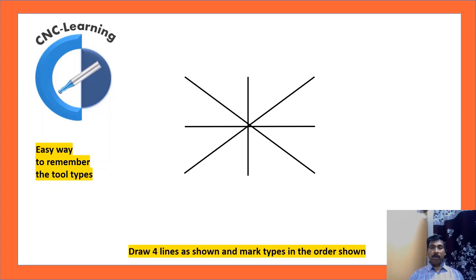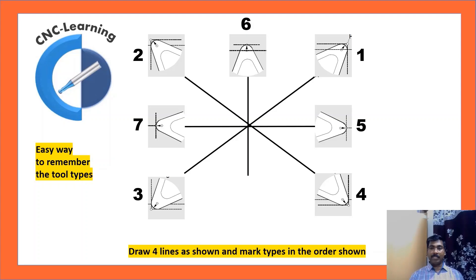Now how to remember all these tool types? Just draw four lines as shown and mark the tool types in the order shown here: 1, 2, 3, 4. So you can see it start from first quadrant, then second quadrant, third quadrant, and then fourth quadrant. Then again, the next point is position 5, 6, 7, 8, and center 9. So this is how you can remember the positions, it is very easy.